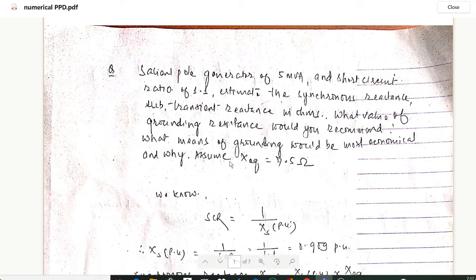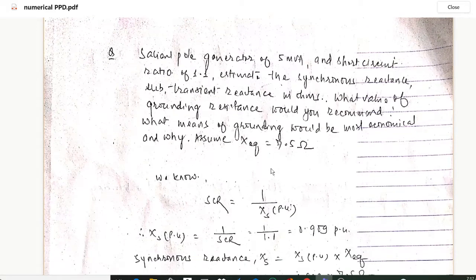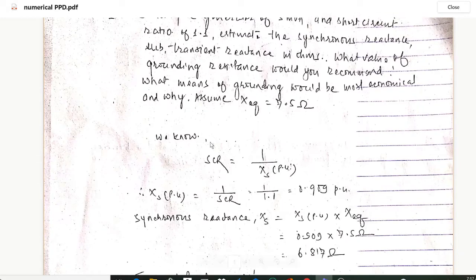Assume X equivalent as 7.5 ohms. So here the very first step: we know the short circuit ratio is given as 1 upon X in per unit. And from here we can calculate X per unit as 1 upon SCR.